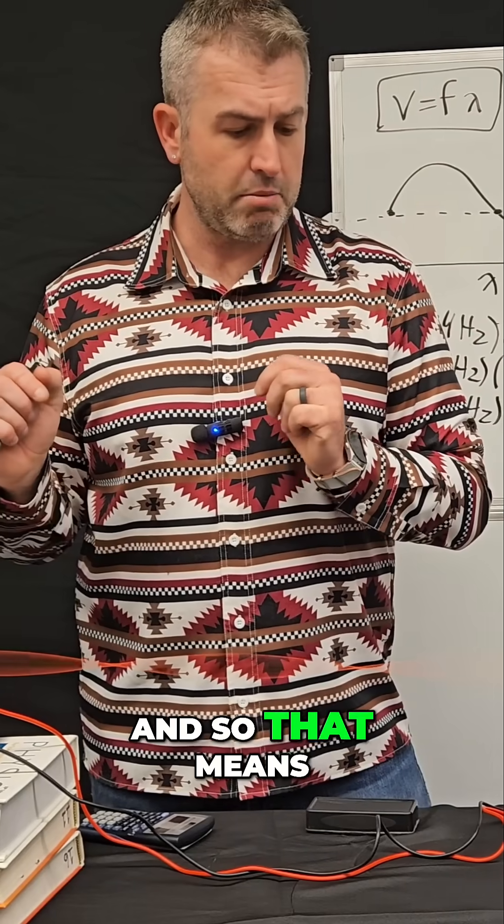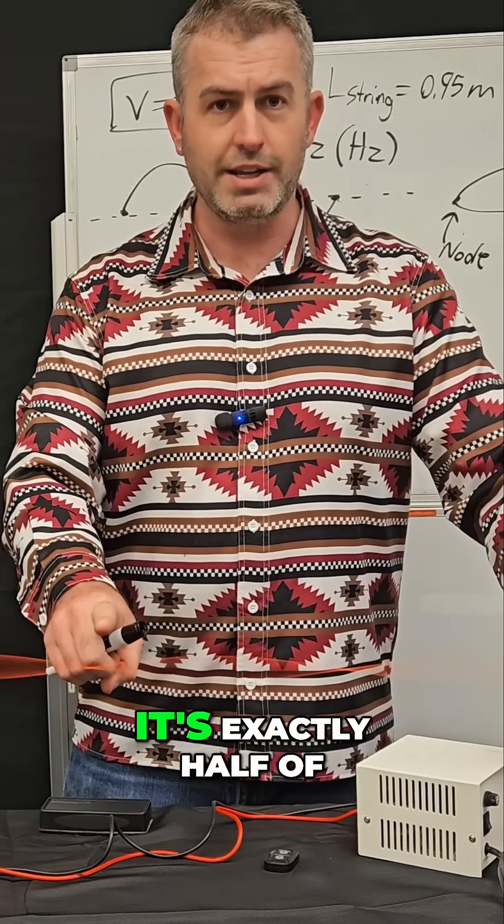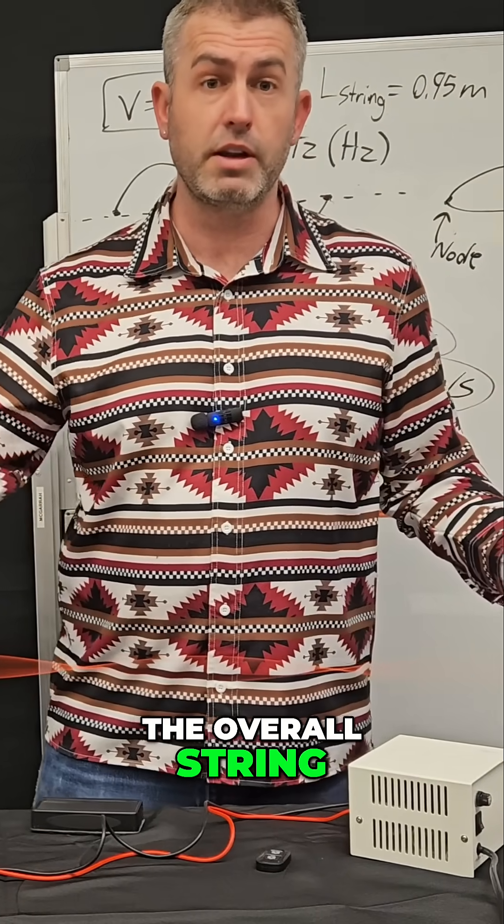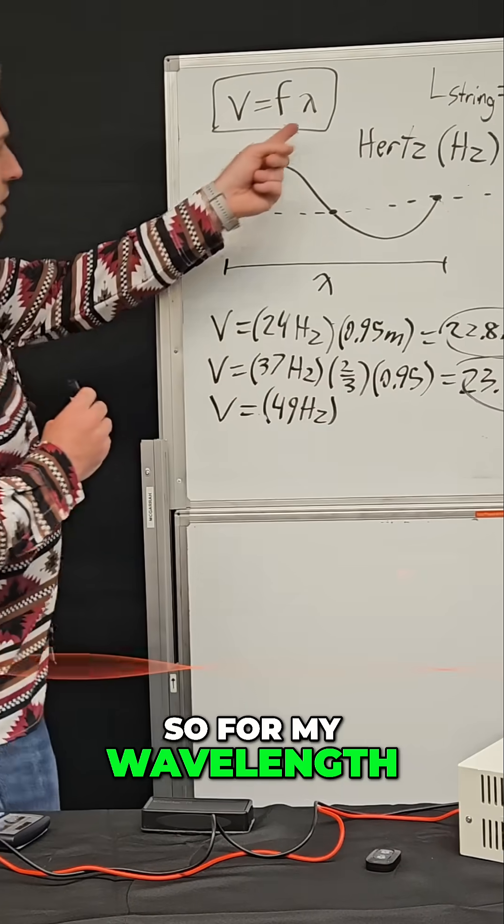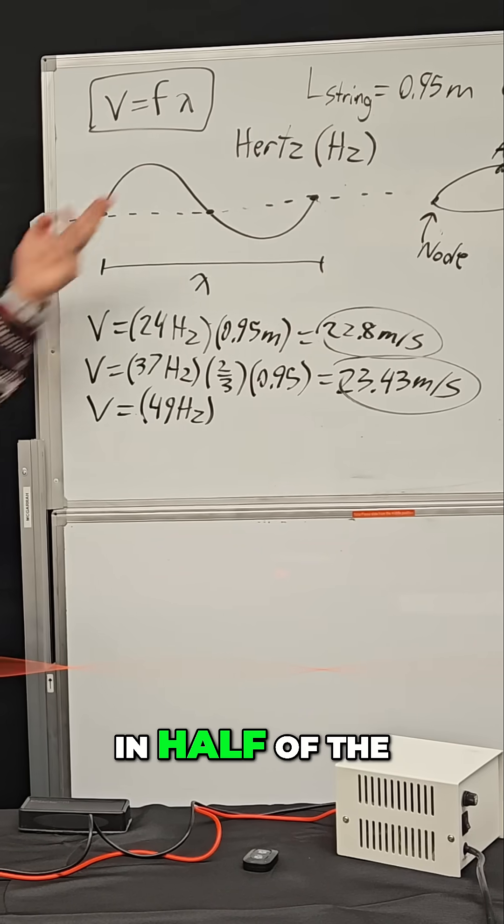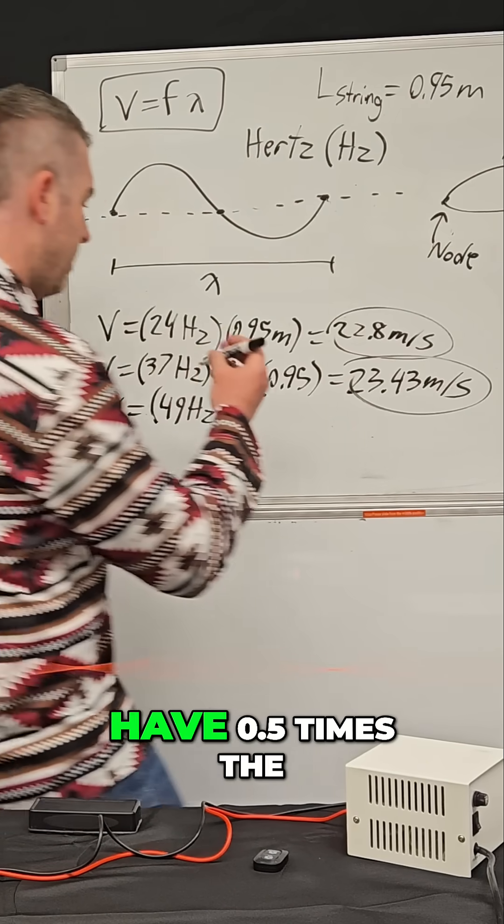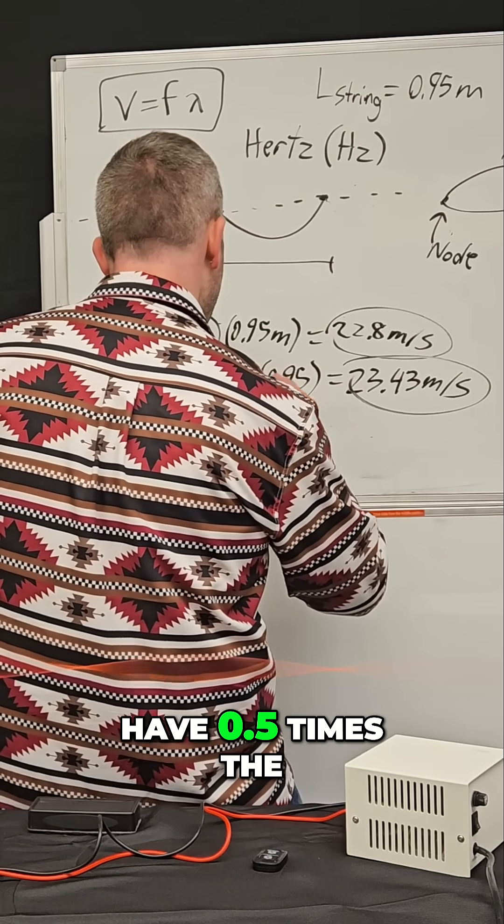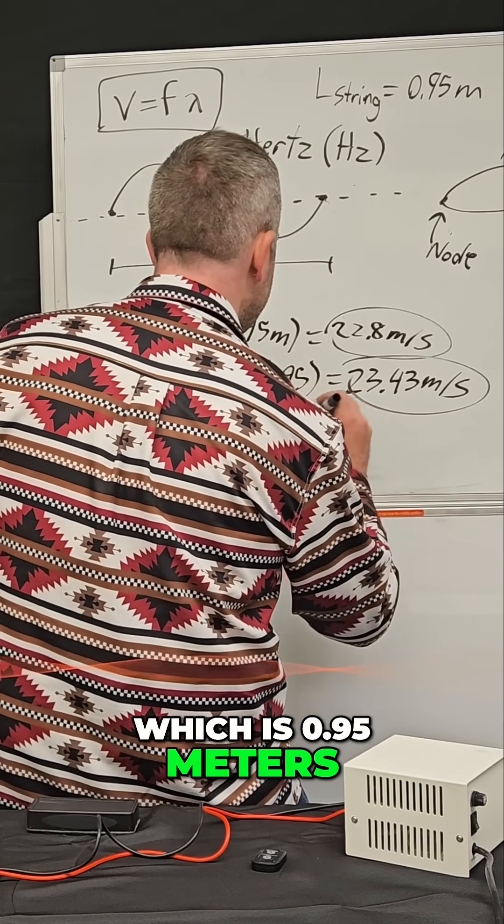And so that means if I look at how long is one wavelength, it's exactly half of the overall string. So for my wavelength, I'm going to plug in half of the string's length. So we have 0.5 times the length of the string, which is 0.95 meters.